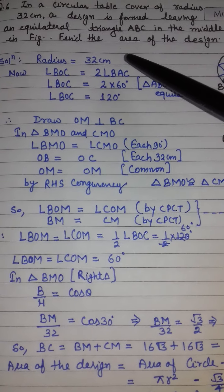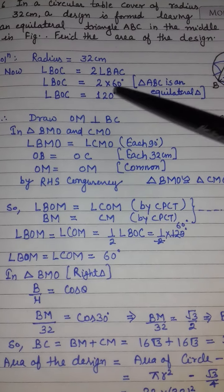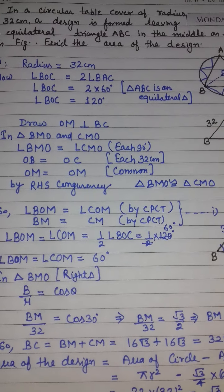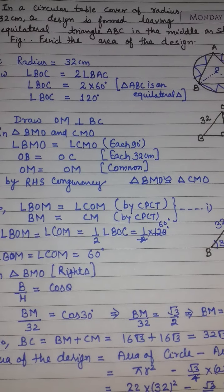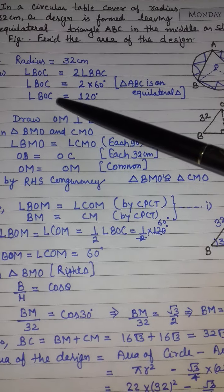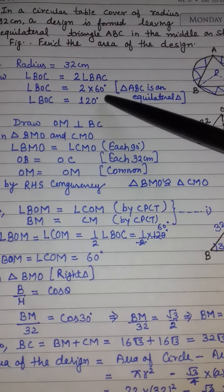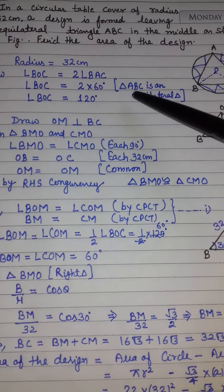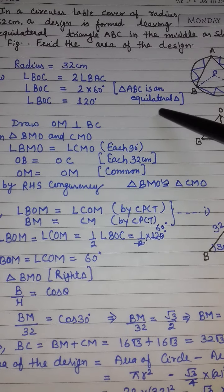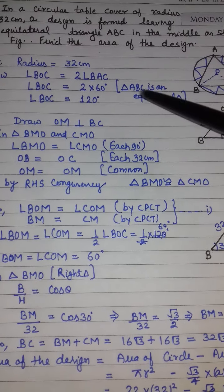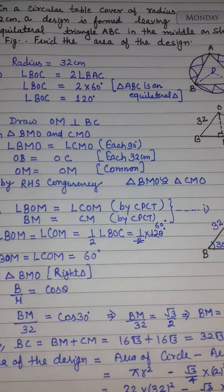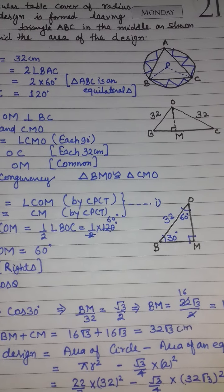Radius हमारे पास 32 cm given है। Center का angle BOC है और arc का angle BAC है। Center का angle arc के angle का double होता है, इसलिए angle BOC = 2 × 60° = 120°, क्योंकि equilateral triangle में सभी angles 60° होते हैं। तो angle BOC = 120°।